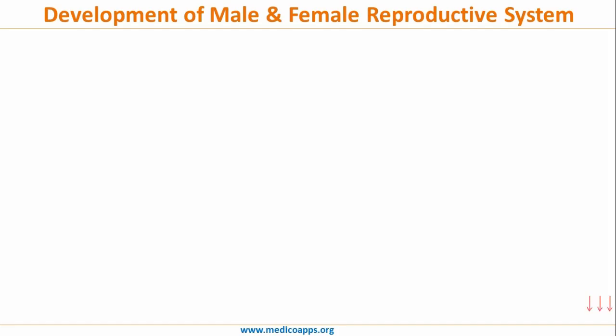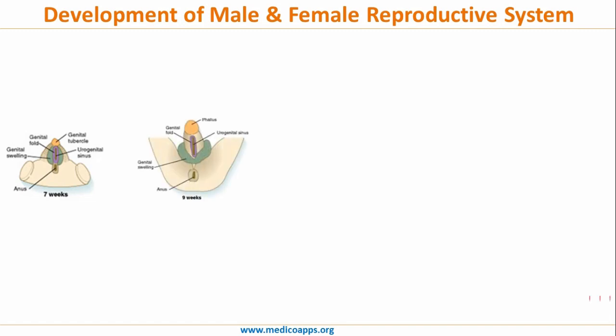Let's have a closer look at the development of male and female external genitalia. At around 7 weeks of gestation, we can see the genital swelling, the genital fold, and the genital ridge along with the urogenital sinus. This development continues till around 9 weeks, and thereafter, based on the presence of male hormones, the external genitalia differentiates into male or female external genitalia.